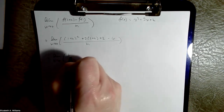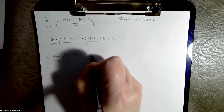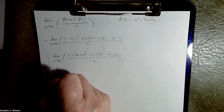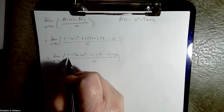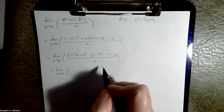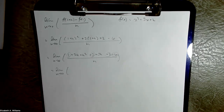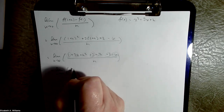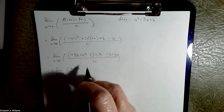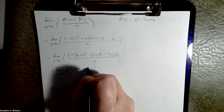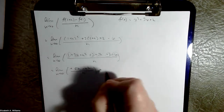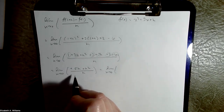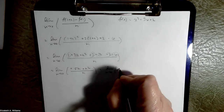So crunch out the algebra: that's 1 + 2h + h² + 3 + 3h + 2 − 6, all over h. Let's clean that up. Limit as h goes to 0. Well, 1 + 3 + 2 − 6 — that all goes to 0. My constants subtracted out to 0. I've got 2h and 3h, so that's 5h, and then an h². All over h. If I factorize an h off the top and divide top and bottom by h, that leaves me with 5 + h.